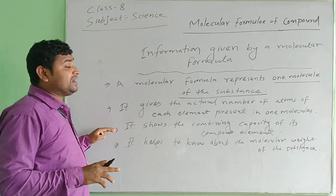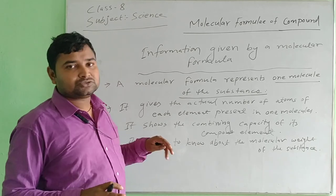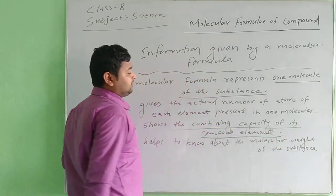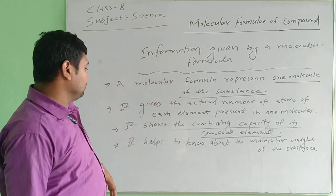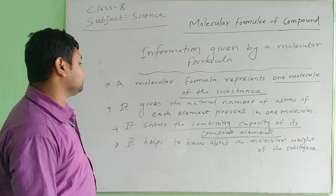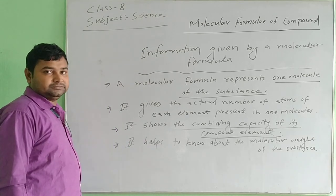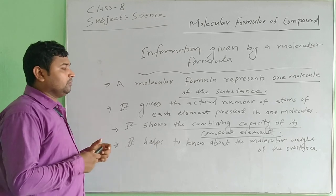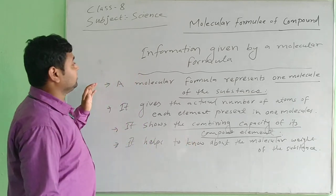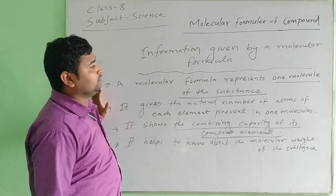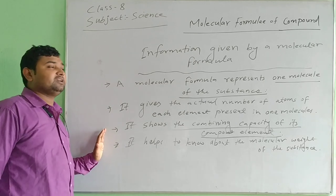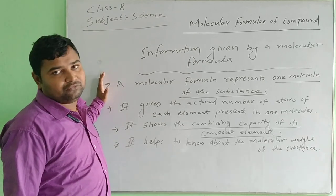Third, it also shows the combining capacity of each compound element. Fourth, it helps us know about the molecular weight of the substance — it gives information about what the molecular weight is, that is, the weight of the molecule. So all of these are the types of information we get from the molecular formula.